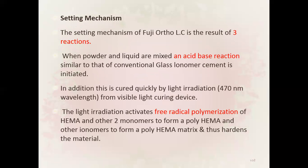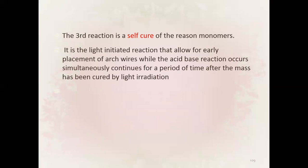The setting mechanism of Fuji Ortho LC results from three reactions. First, an acid-base reaction similar to conventional GIC is initiated when powder and liquid are mixed. Second, it is cured quickly by light irradiation from a visible light curing device, which reactivates free radical polymerization of HEMA and other monomers to form a poly-HEMA matrix, hardening the material. Third, there is a self-cure reaction for the resin monomers — a light-initiated reaction that allows early placement of archwires while the acid-base reaction continues simultaneously for a period after light curing.